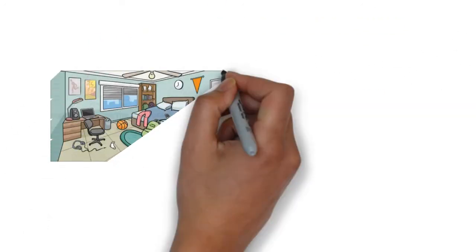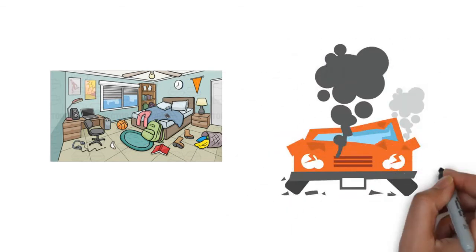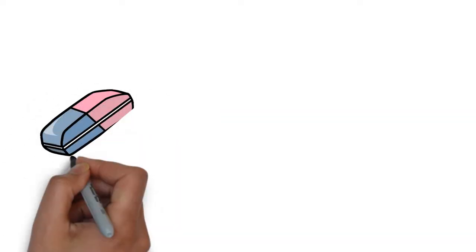We've all seen this in everyday life. A room is easy to make messy but hard to make clean. It's easy to crash a new car but hard to repair it afterward. Entropy is also what makes rubber work.